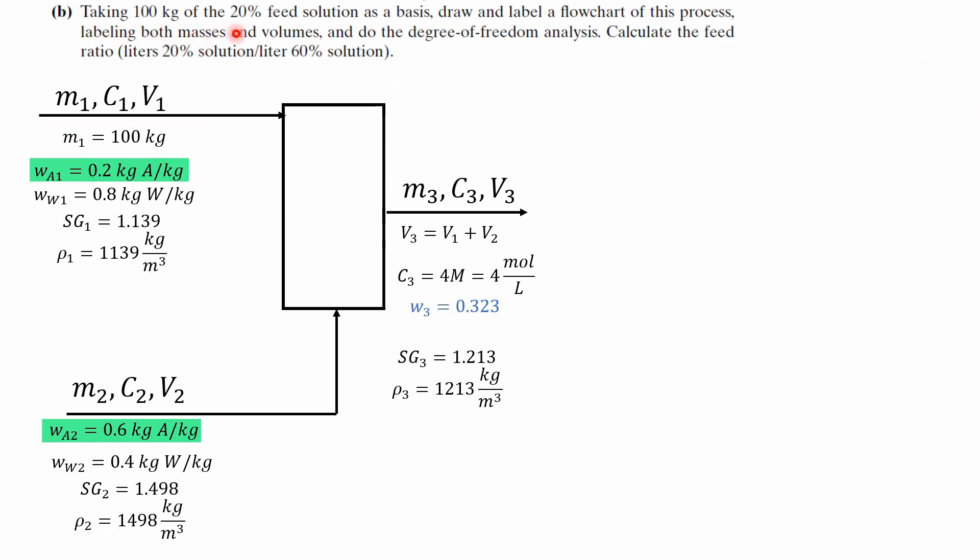Now taking a hundred kilograms of the feed solution as a basis, draw and label the flow chart in the process, labeling both masses and the volumes, and calculate the feed ratio. Now for this part of the problem we can take a hundred kilograms as a basis. So a basis is just a simple way of making up a number and using that number to continue on for the rest of the problem.